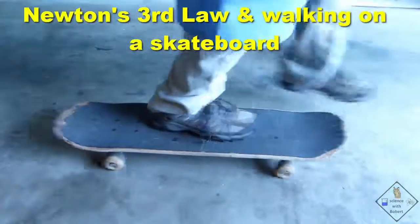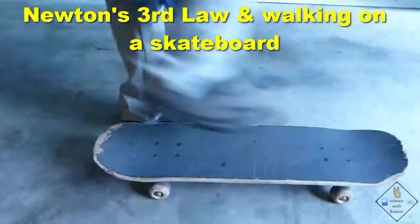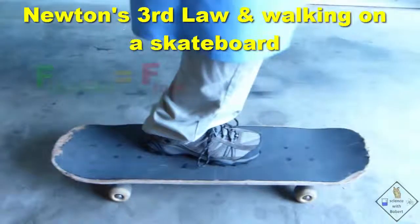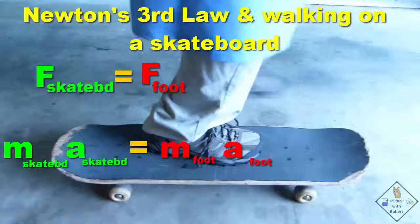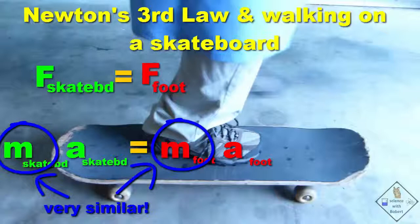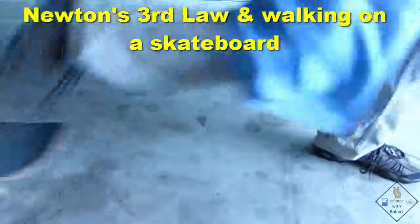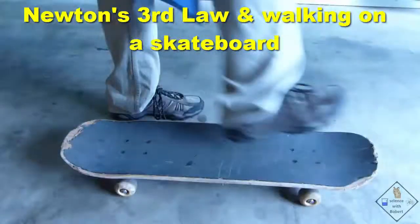Maybe this will be easier to see. Let's take another look at walking, but on a skateboard. Just like before, the force exerted by your foot must be the same as the force exerted by the skateboard, just opposite in direction. The mass of the foot times the acceleration of the foot has to equal the mass of the skateboard times the acceleration of the skateboard. But this time, the mass of the skateboard is pretty much the same as the mass of the foot, so the acceleration of the foot is close to the same as the acceleration of the skateboard. And now we can see the skateboard accelerating in the opposite direction as the foot.